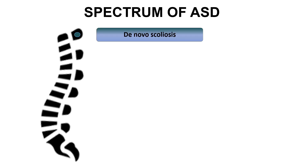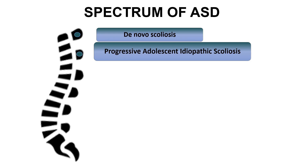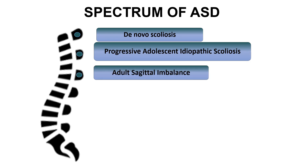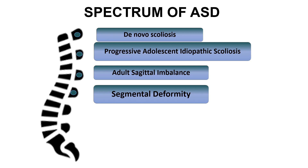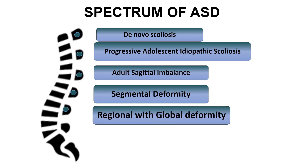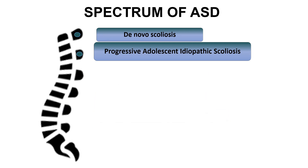The spectrum of adult spinal deformities includes de novo scoliosis, progressive adolescent idiopathic scoliosis, adult sagittal imbalance, segmental deformity, and regional deformity due to multiple degenerative disc disease with global deformity. I will start my discussion with the two main categories of adult scoliosis based on etiology, which are de novo scoliosis and progressive adolescent idiopathic scoliosis.